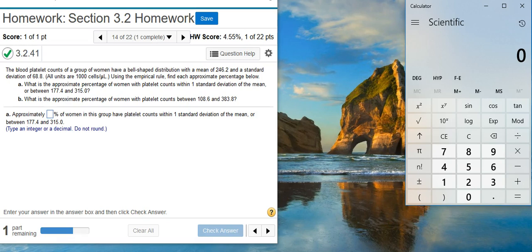Part A, what is the approximate percentage of women with platelet counts within one standard deviation of the mean, or between 177.4 and 315.0? Part B, what is the approximate percentage of women with platelet counts between 108.6 and 383.8?